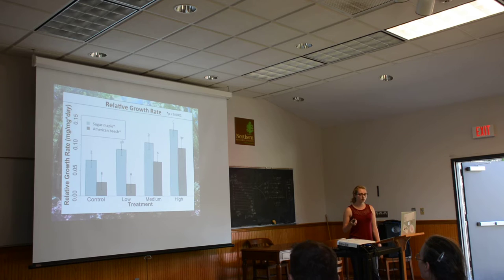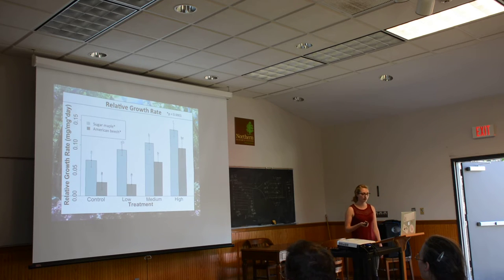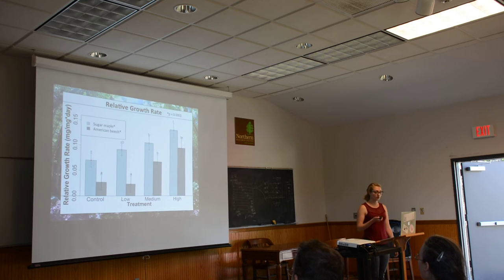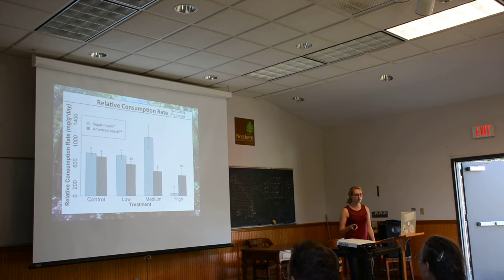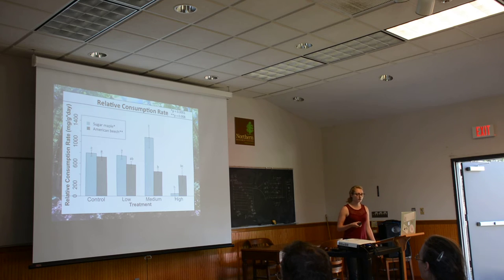In terms of results, I found what I expected with the beech: the highest growth rate was in the high treatment plots, indicating higher leaf quality. However, what I saw with the sugar maple was exactly the opposite of what I expected — the sugar maple leaves in the high treatment plots had the highest growth rate. For consumption rate, again with the beech I saw what I expected, with the lowest consumption rate in the high treatment plot, meaning they were eating the least amount there. But again with the sugar maple, I saw the opposite of what I expected.